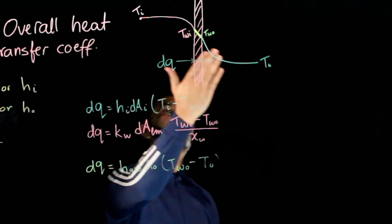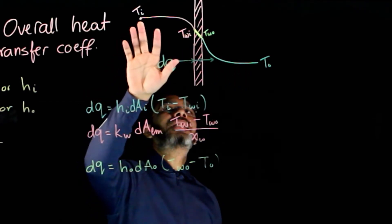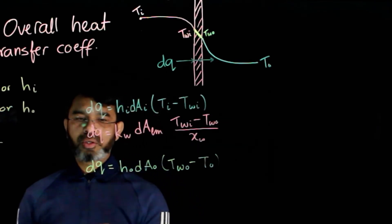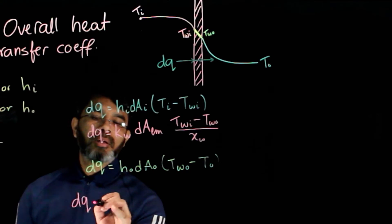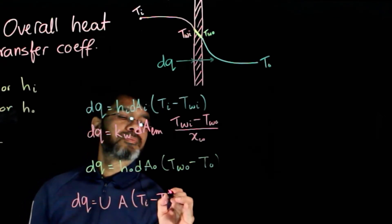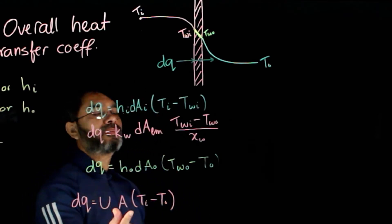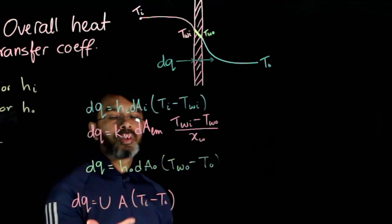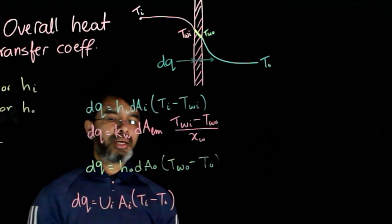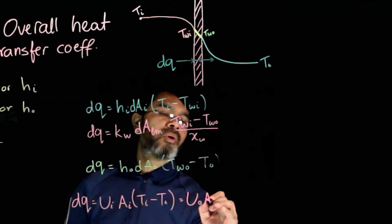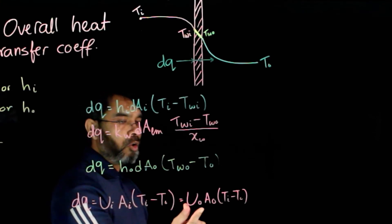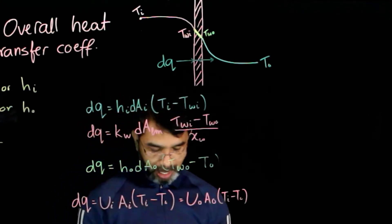To define an overall heat transfer coefficient for this entire system, it will be dependent on the two temperatures T_I and T_O. We write the overall heat transfer as dQ equals U times A times delta T equals U times A times (T_I minus T_O). We can use the mean area, outside area, or inside area. If we use the inside area it becomes U_I; if we use the outside area it becomes U_O times A_O times (T_I minus T_O). So depending on which area you define, you get the overall heat transfer coefficient corresponding to that area.